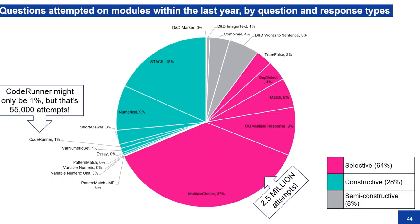In this pie chart, what I've tried to do is show the questions attempted on modules by students, by the question type and then by the response type. The question type would be something like multiple choice, and that's classified as a selective response type because students are just selecting options A, B, or C — whereas constructive is where students are inputting their response, either a number or perhaps a short piece of text. As we can see, 66% — two-thirds — is selective. Multiple choice is our most common, and that's 2.5 million attempts by students in the last 12 months.